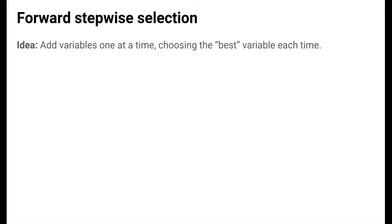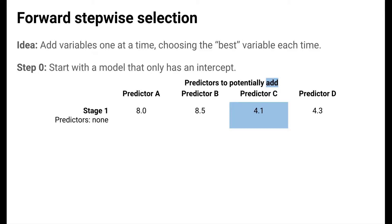Another subset selection procedure is forward stepwise selection. In forward stepwise selection, the idea is to add variables one at a time, choosing the best variable to add each time. Again, best refers to the model quality metric that we've chosen, often adjusted R-squared or cross-validated mean squared error. We start with an empty model that only has an intercept. And in the first stage, we consider all of the single variable models.